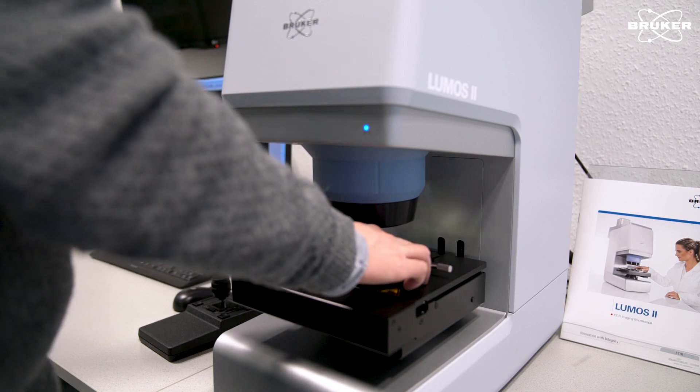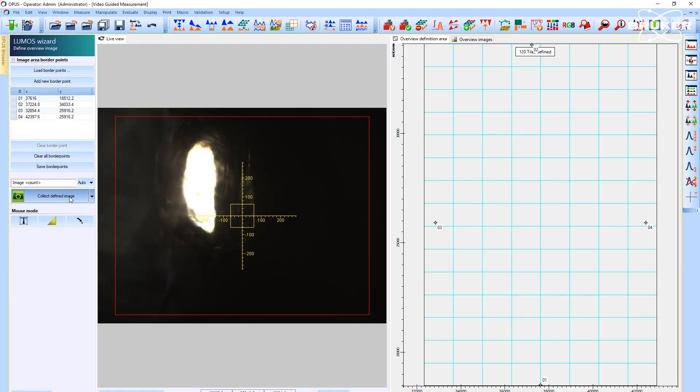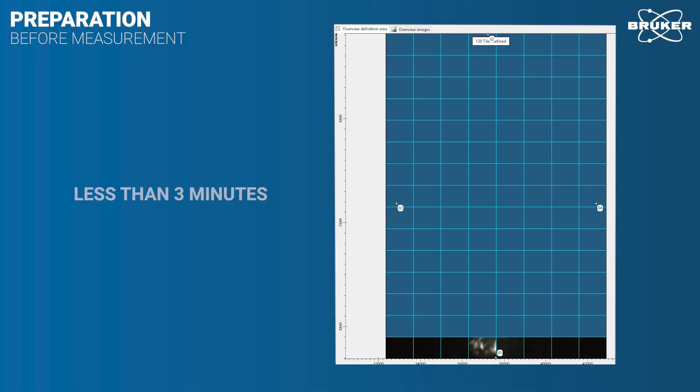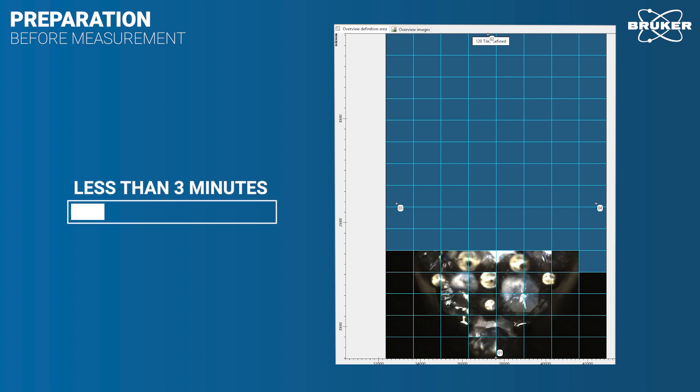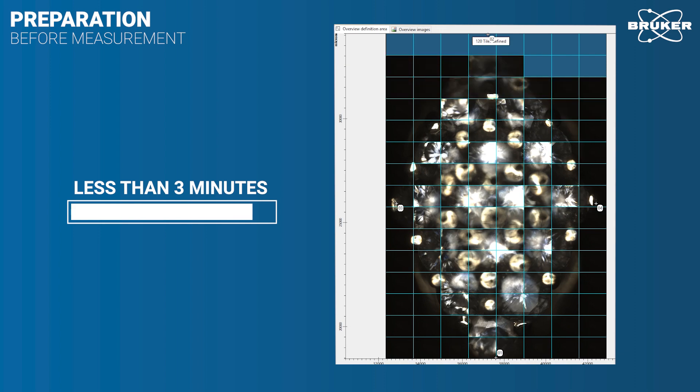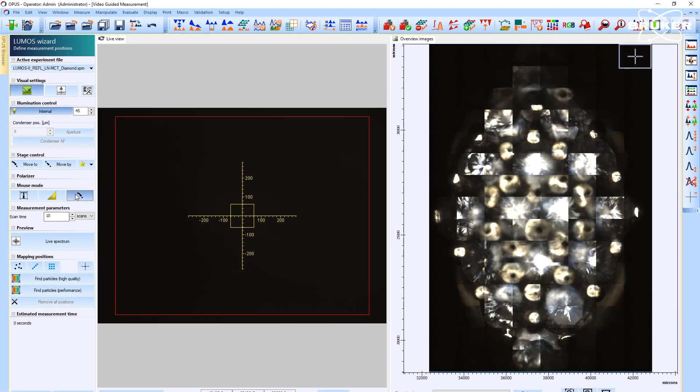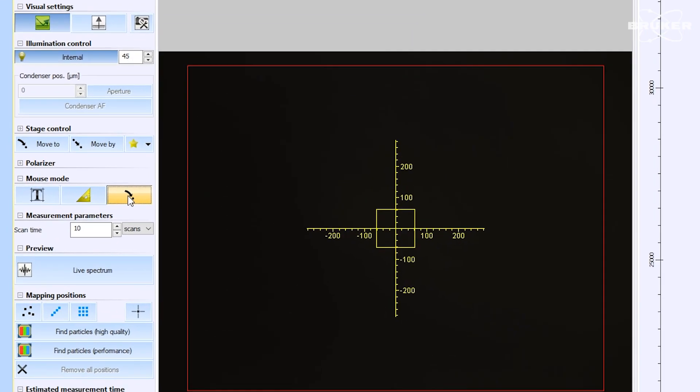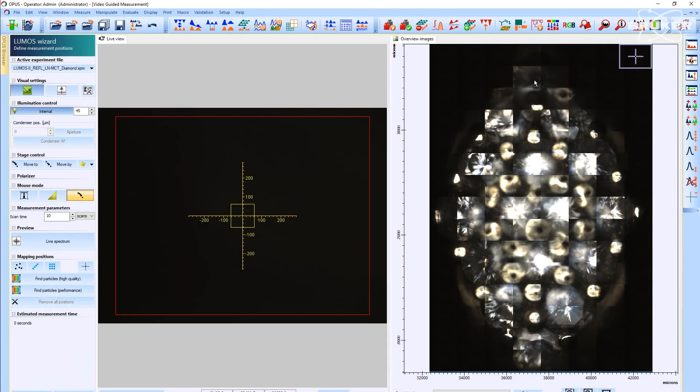We place the holder underneath the Lumos 2 FTIR microscope. Next, we take an overview image in less than 3 minutes. This will help us to choose the best measurement spots. We go through the step-by-step wizard, place the measurement spots by clicking where we want to measure.